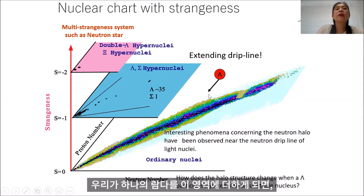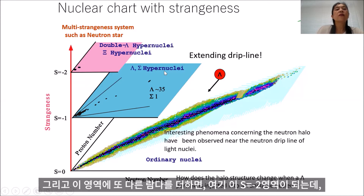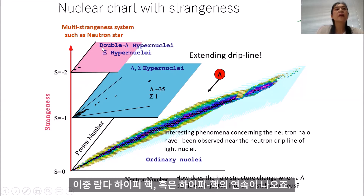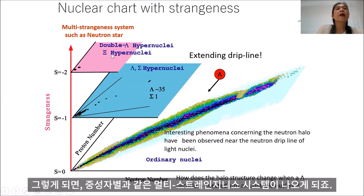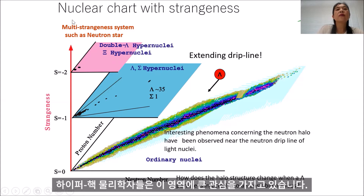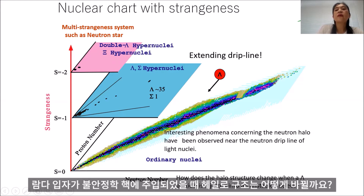If we add one lambda to this sector, then we have the S = −1 sector, namely lambda or sigma hypernuclei. Adding one more lambda gives the S = −2 sector, such as double-lambda hypernuclei or cascade hypernuclei. Adding many more lambdas, the extreme limit of the multi-strangeness system is like a neutron star. The key question is: how does the halo structure change when the lambda particle is injected into this unstable nucleus?